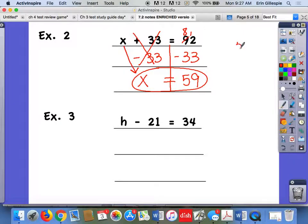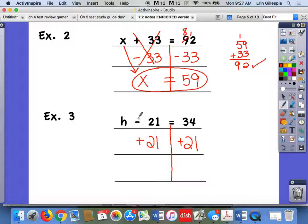If I check that over here, I basically would be doing 59 plus 33 in my equation. And that works out. So my check works. I got the right solution. Example 3, H minus 21 equals 34. Draw my line, find my variable, what's happening to my variable. I'm subtracting 21. So to isolate it, I need to do the opposite. I need to add 21 to both sides. This is the first time we're adding to solve an equation. If it's subtracting to begin with, we add. If it's adding to begin with, we subtract.